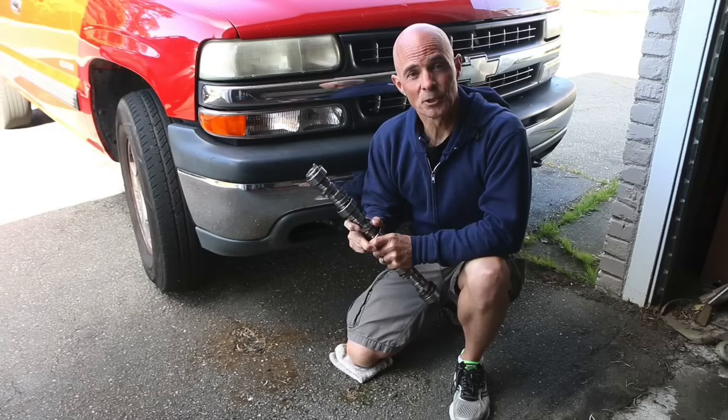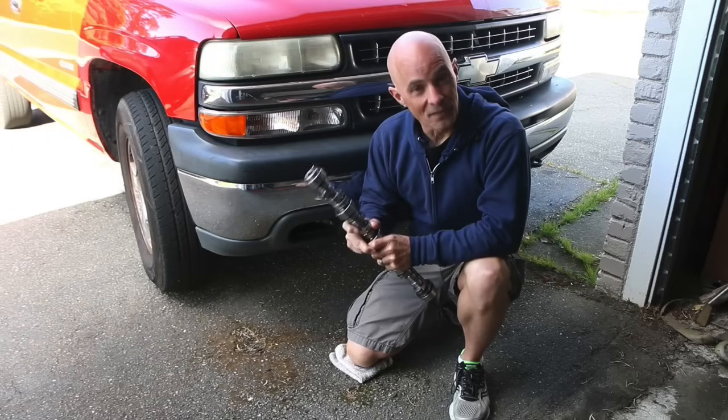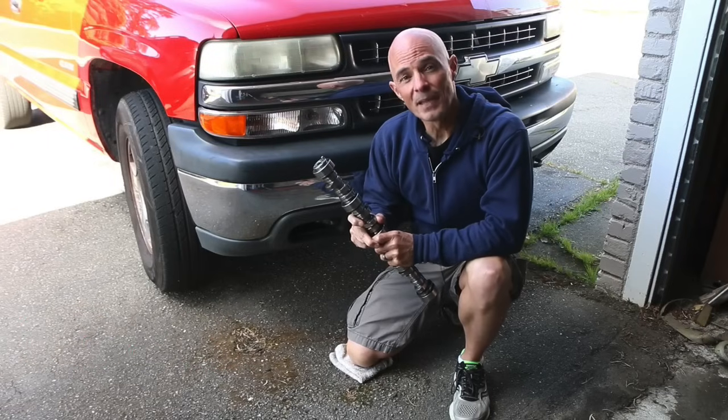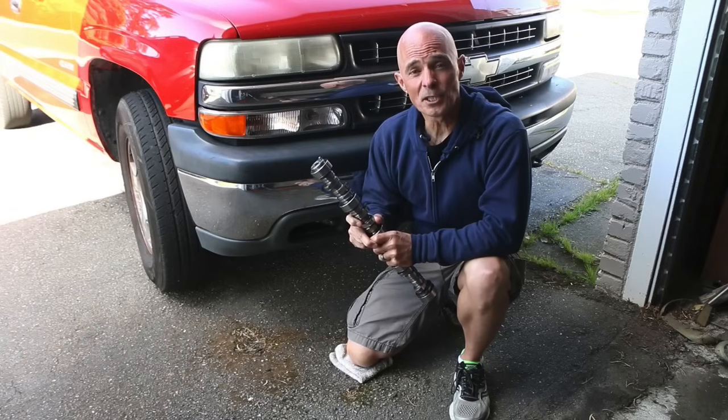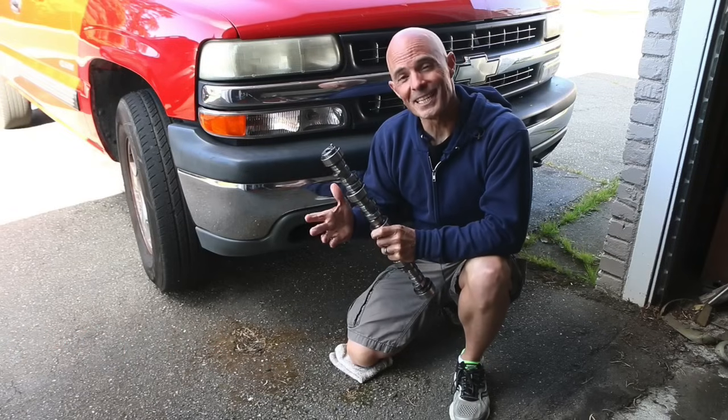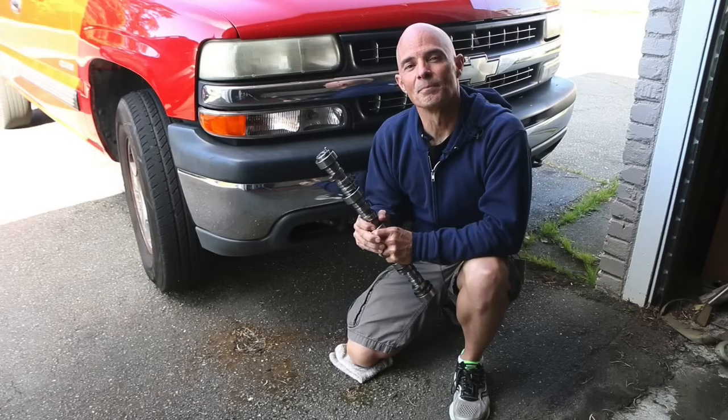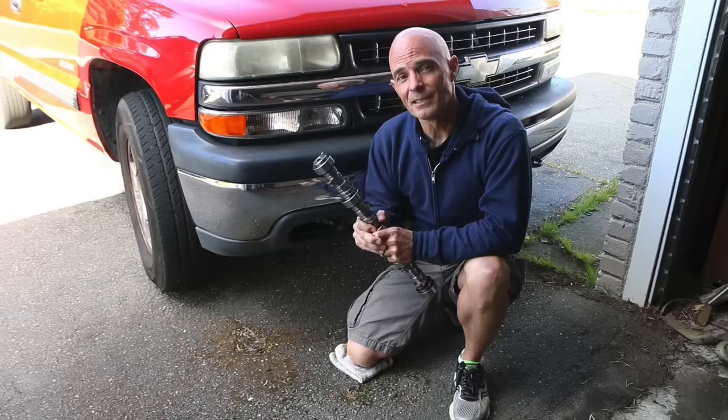Camshaft number one has a 108. Camshaft number two, a 112. And the final cam, camshaft number three, has a 120 degree lobe separation angle. Now originally there was also supposed to be a 116 but we never got that cam tested. So let's find out what a change in just lobe separation angle does to the power curve.